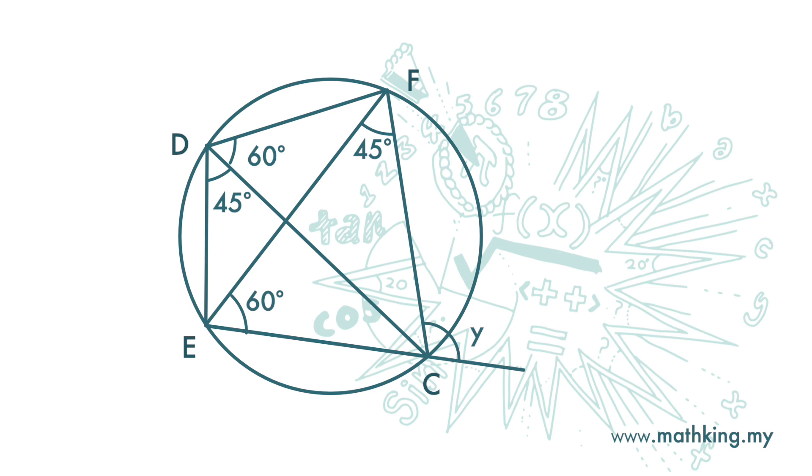Now we have the value of the interior opposite angles for this vertex of cyclic quadrilateral. It is 60 plus 45, which is 105 degrees.